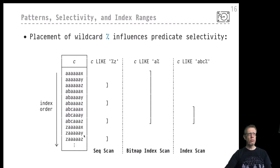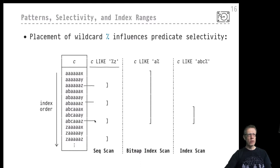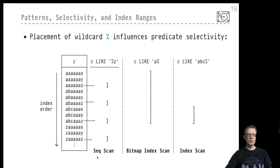Now let's think about what it means to support a predicate like 'arbitrary strings that end in z' with this B+ tree. Those strings could be found anywhere all over the sequence set — the lexicographic ordering will not help at all. We would have to scan the entire sequence set to find all matches. And we've seen the database system's reaction in such situations: if the entire index sequence set must be scanned anyway and we have to follow read pointers from anywhere into the underlying file, it's best to just drop the index and perform a sequential scan.